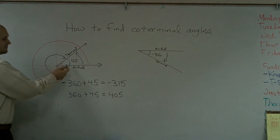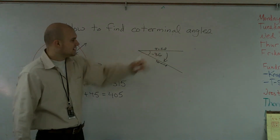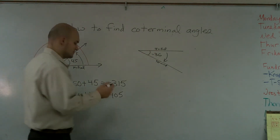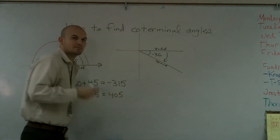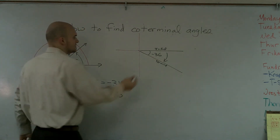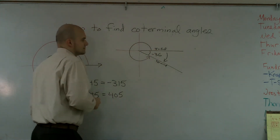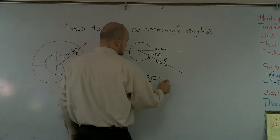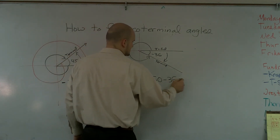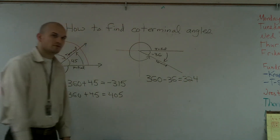All right. For this one, I'm just going to represent it on the axis. So you can remember — go 360 degrees. If we're here, if I was going to go in the opposite direction, pretty much what that is, is 360 minus 36, which is 324 degrees.